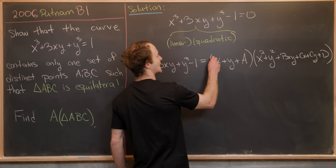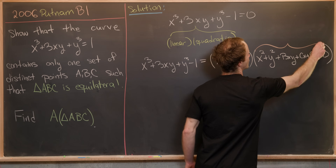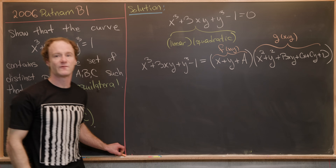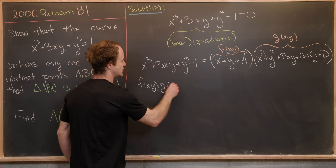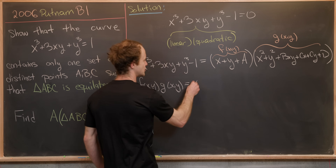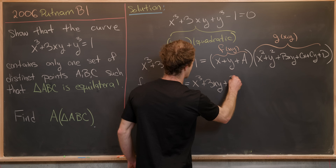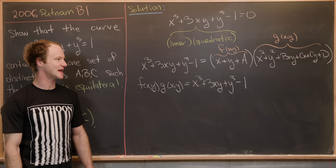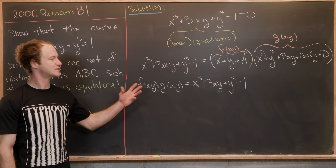We'll call the linear polynomial f(x,y) and the quadratic polynomial g(x,y), and we want to enforce f(x,y) · g(x,y) = x³ + 3xy + y³ − 1. We're going to use techniques standard for partial fraction decomposition: multiply out f · g, extract coefficients of x³, y³, xy, and so on, and set them equal to the corresponding coefficients on the right-hand side.